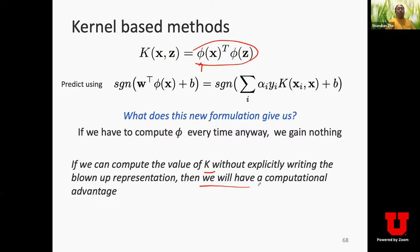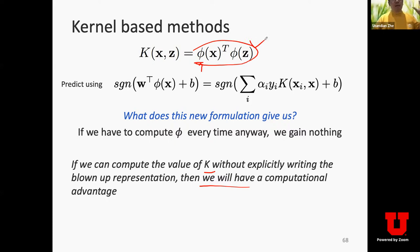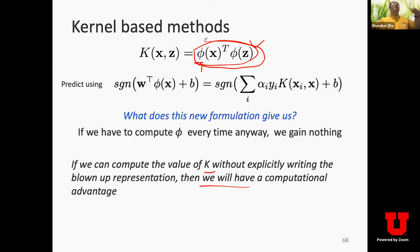The key insight is: if we can compute the value of k(x, z) without explicitly computing the feature mapping φ, we gain a significant computational advantage. For example, if φ maps a 2-dimensional input to one million dimensions, computing k by following the definition requires constructing two one-million-dimensional vectors and computing their dot product — extremely expensive. If we can instead compute k(x, z) directly in the original low-dimensional space, the computation is much cheaper. We call this computational trick the kernel trick, which we will discuss in detail in the next lecture.